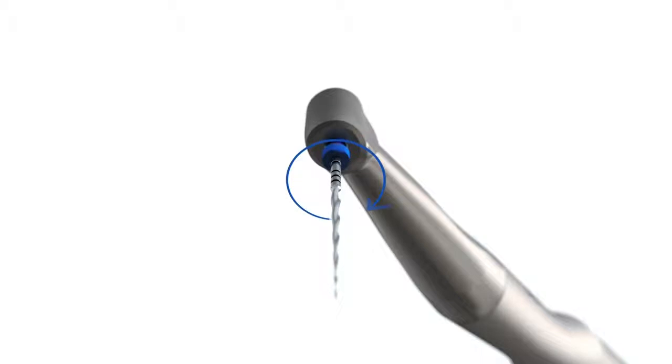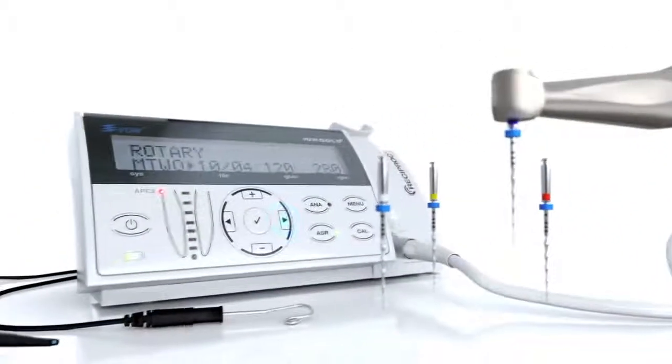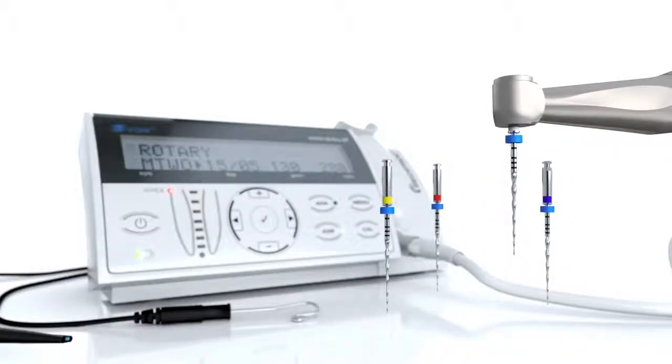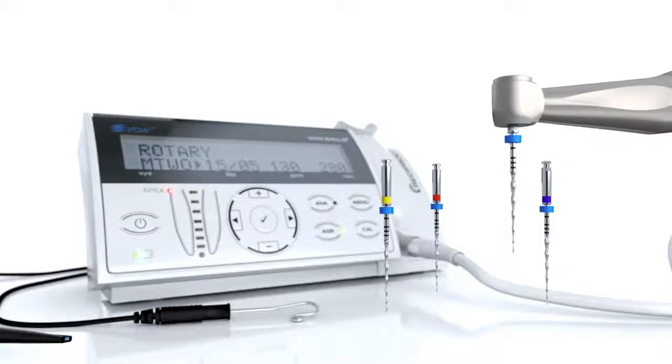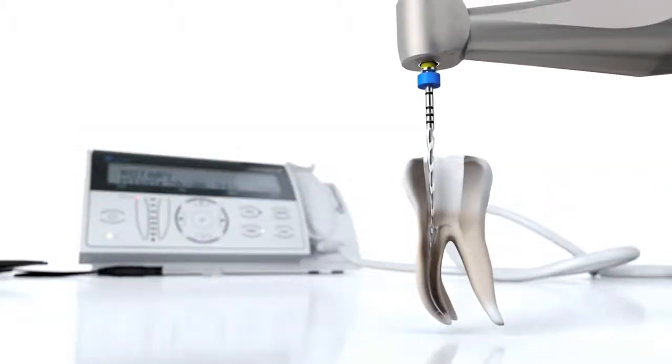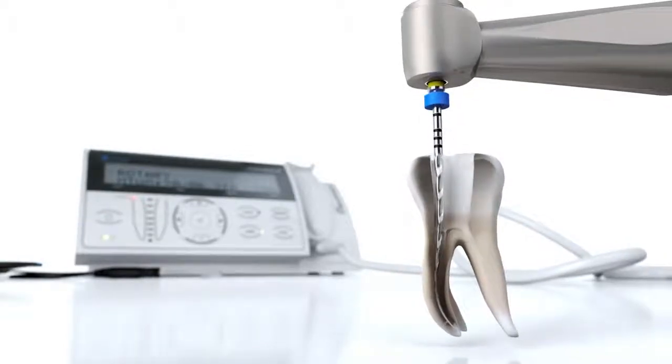If you have pre-selected a rotary file system, press the right arrow key to select the file size inserted in your contra angle. The motor then uses the correct torque value for each file size. This is important to ensure safe use of rotary file systems.